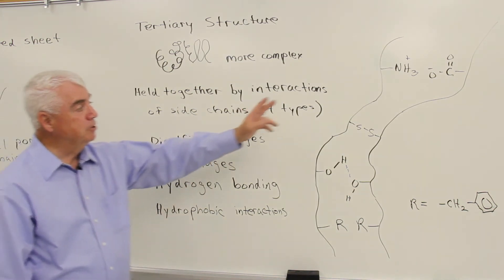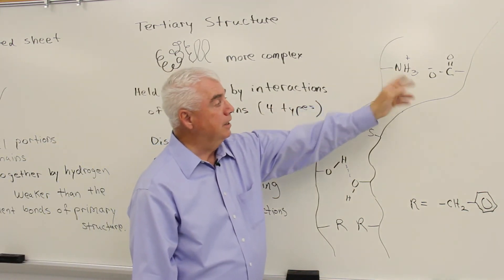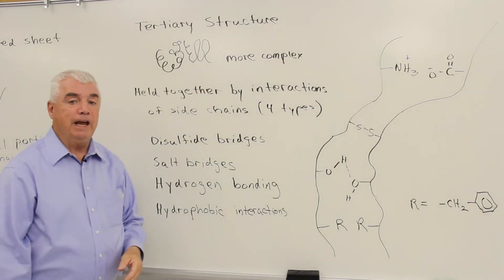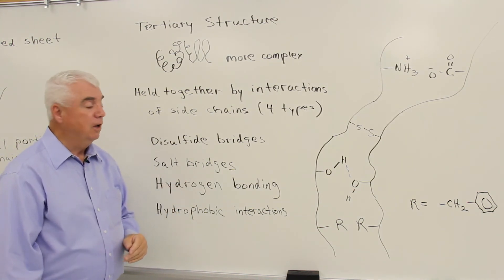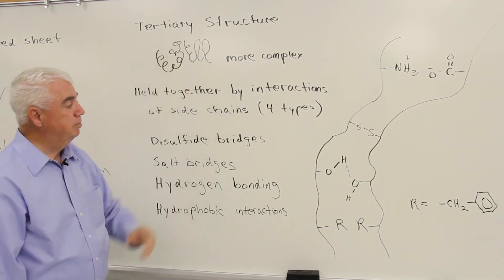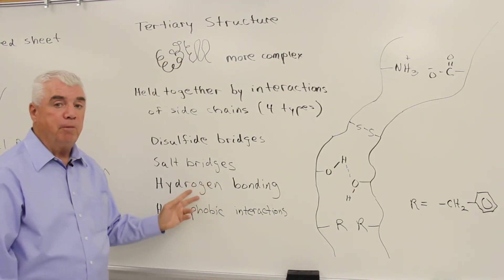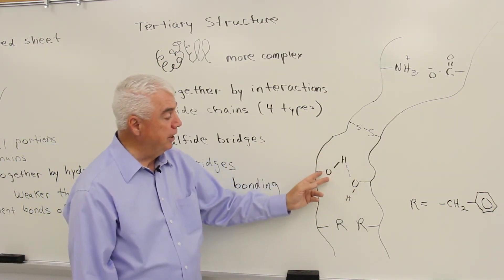And up here is an example. If we had a side chain with an amino group and a side chain with a carboxylic acid group, the positive and negative could attract each other. And these attractive forces would hold this, help hold this protein in three-dimensional form.